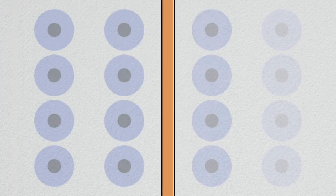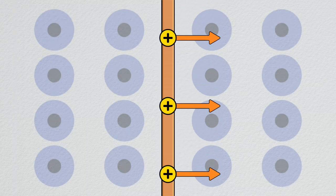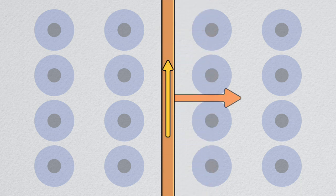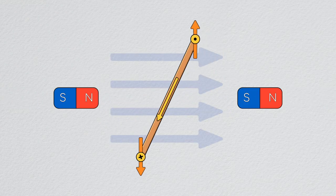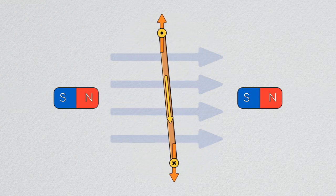Hey everyone, welcome back to Understanding Motors. Last episode we discussed how running current through a wire situated in a magnetic field can create a force on the wire, and how if we make a loop out of the wire we can create a net torque on that loop.